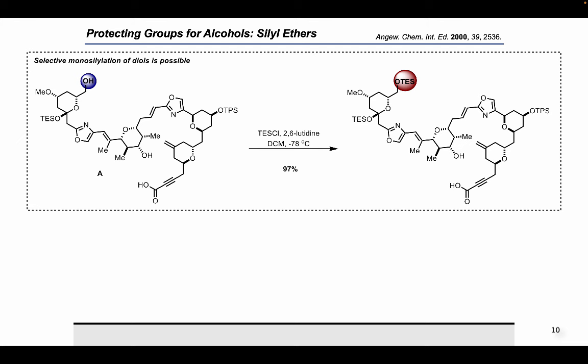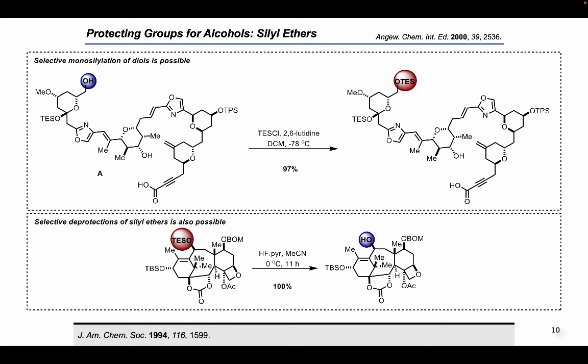Apparently, there is no reaction between the silyl chloride and 2,6-lutidine, which simply acts as a base. Steric factors also play an important role in determining selectivity of deprotection of silyl ethers. As a result, the TES ether can be cleaved in the presence of a bulkier TBS ether using HF in acetonitrile. In general, methods used to cleave the TBS ether are also effective for cleavage of the TES ether.